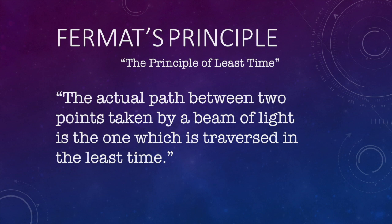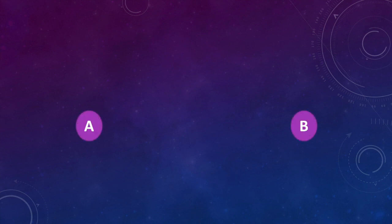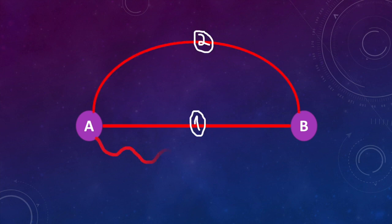Let's think about this. Consider two points, let's call them A and B. We can draw many different paths from A to B — we could follow a straight line or we could travel through a wavy one as shown in the diagram. We reach the same point, although the time taken is different. Clearly, among the infinite number of different paths it is possible to take, the one traversed in the shortest time is a straight line, and a beam of light always tends to take the quickest path.